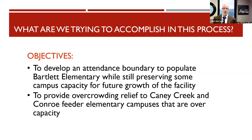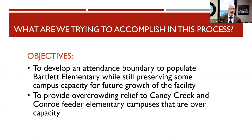So what are we trying to accomplish with the zoning of Bartlett Elementary? Really a lot of things, but two stand out. Number one, just like all 65 schools had to have a boundary created for where they serve, so does Bartlett Elementary. We're trying to develop an attendance boundary to populate Bartlett Elementary while preserving some room for growth of the facility — and it's in the north part of our district where we are experiencing fast growth. We're also trying to provide overcrowding relief to a number of elementary schools in the Caney Creek and the Conroe feeder zones.